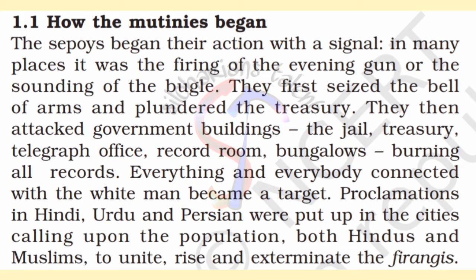The first sub-part is the beginning of the mutiny. The sepoys in the cantonment of Meerut broke out into mutiny in the afternoon of 10th May 1857. They seized and robbed the British treasury and weapons. They attacked government buildings including the jails, treasury, telegraph office, record rooms, and bungalows. Records were burned and everything related to the white men was targeted. On 11th May, the sepoys arrived in Delhi and killed a large number of Europeans. The rich of Delhi were also attacked and looted.